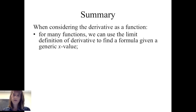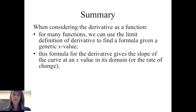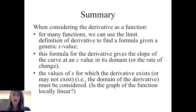When considering the derivative as a function, for many functions we can use the limit definition to find a formula given a generic x value. This formula for the derivative gives the slope of the curve — or the rate of change — at an x value in its domain. We also have to consider the domain of the derivative: is the graph of the function locally linear for the various x values?